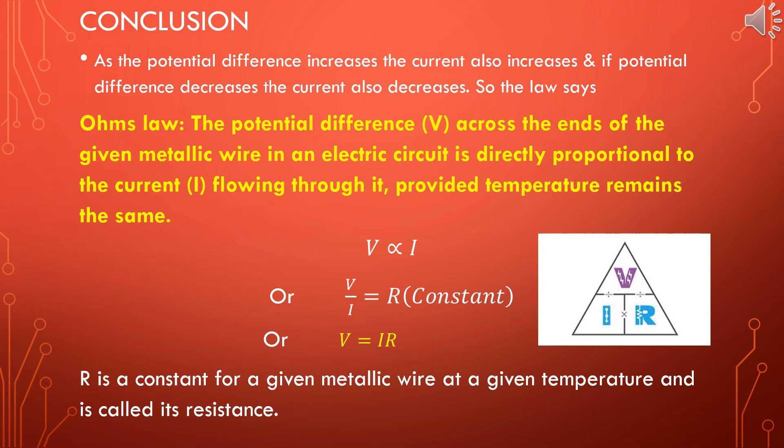R is a constant for a given metallic wire at a given temperature and is called its resistance. This is the new physical quantity introduced in Ohm's law. There is a magic triangle which helps us write the formula: V is equal to I into R; or for current, I is equal to V by R; or for resistance, R is equal to V by I.